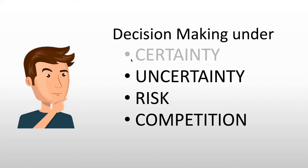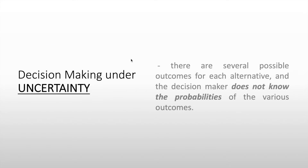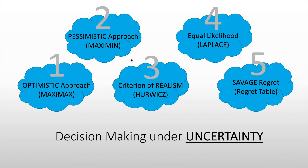Now let's go to decision making under uncertainty. Decision making under uncertainty is where there are several possible outcomes for each alternative, and the decision maker does not know the probabilities of the various outcomes. There are five possible criteria: the optimistic approach, the pessimistic approach, the criterion of realism or Hurwicz approach, equal likelihood or the Laplace approach, and savage regret or the regret table approach.